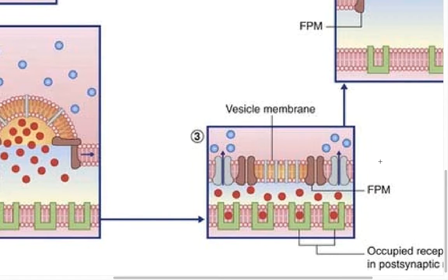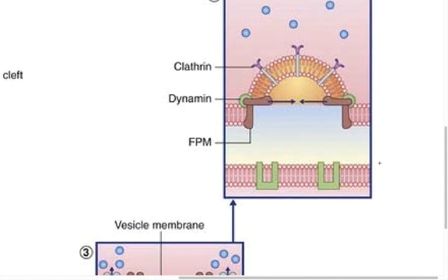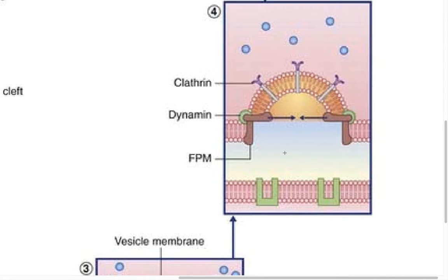So after your neurotransmitters do their job, after they bind to the receptors and send the signals, your vesicle will be pulled back to where it belongs. With the help of two proteins, you have the clathrin protein, which helps the inward movement of the membrane, and then you have dynamin, which brings back the FPMs where they belong.